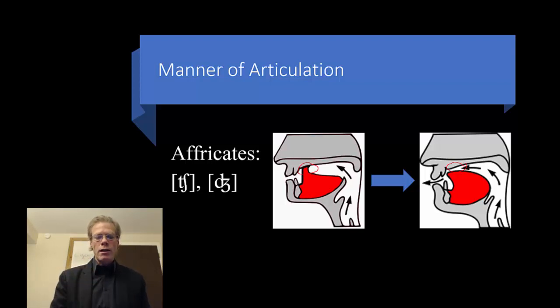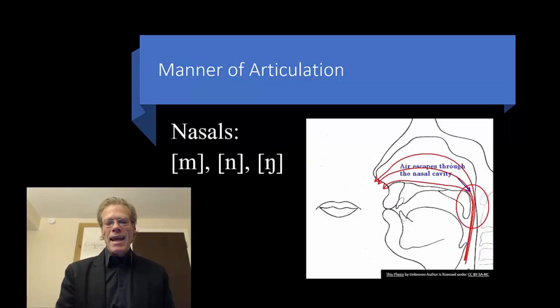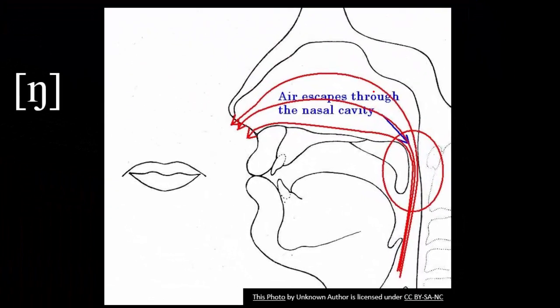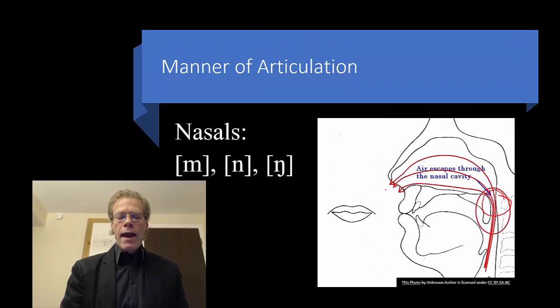Then we've got the nasals. The nasals involve a place right here where we allow the velum to drop down. So the velum controls whether air goes through our nasal cavity or not. So we've got air coming up. It can go through the mouth but if we open up that velum then we can have it go through the nasal cavity. And you can see this.